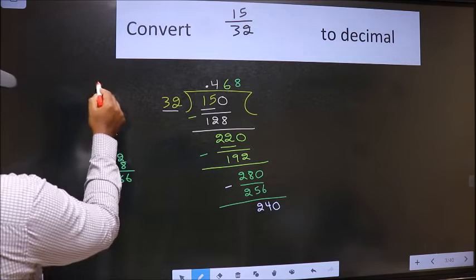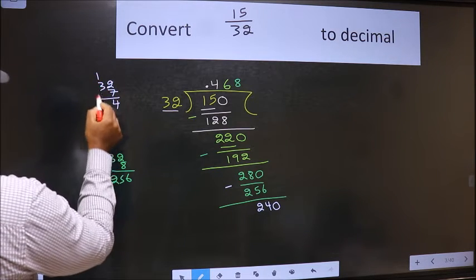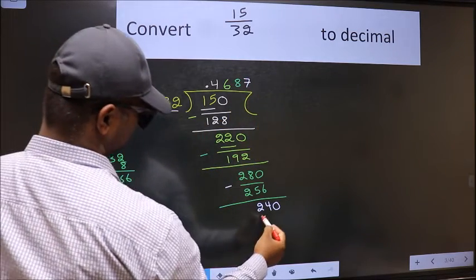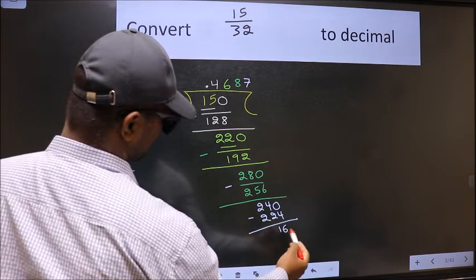Let us take 32 7s. 7 to 14. 7 to 21. We get 224. Now we should subtract. We get 16.